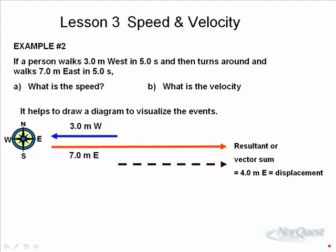When we calculate the speed and velocity, we have to keep in mind that the distance, which is ten meters, is different than the displacement, which is only four meters east.